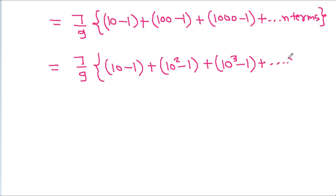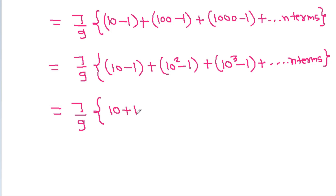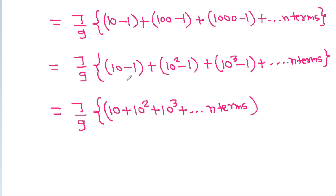And it will be equal to 7 by 9 times the sum: (10 plus 10 squared plus 10 cubed plus up to n terms) minus (1 plus 1 plus 1 ... n times), which gives minus n.